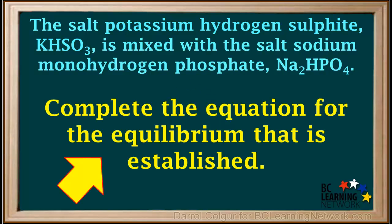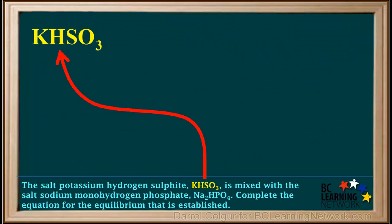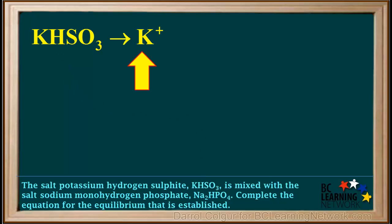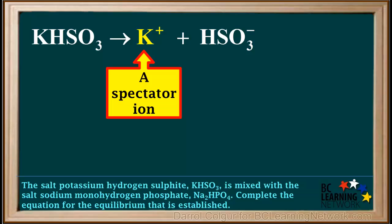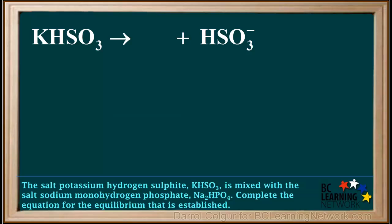We begin by taking the salt KHSO₃ and writing the dissociation equation for it. It dissociates into K⁺ and HSO₃⁻. K⁺, an alkali metal cation, is a spectator ion, so we can eliminate it. All we're left with is HSO₃⁻.